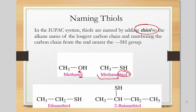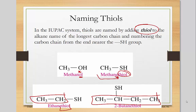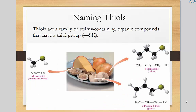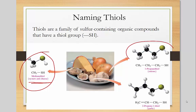For thiols you keep the E, unlike alcohols where you drop it. So here's ethane with an SH — that becomes ethanethiol. Here's butane, and on the second carbon there's an SH — that's 2-butanethiol. As far as familiar smells: methanethiol is found in oysters and cheeses, 1-propanethiol is in onions, and 2-propanethiol is the garlic smell.